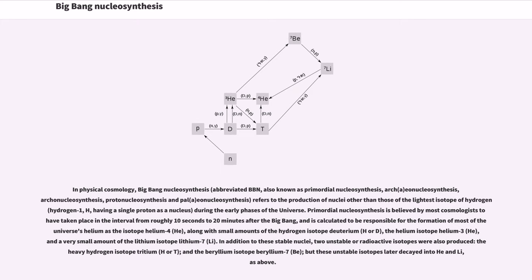In addition to these stable nuclei, two unstable or radioactive isotopes were also produced: the heavy hydrogen isotope tritium and the beryllium isotope beryllium-7, but these unstable isotopes later decayed into helium and lithium, as above.